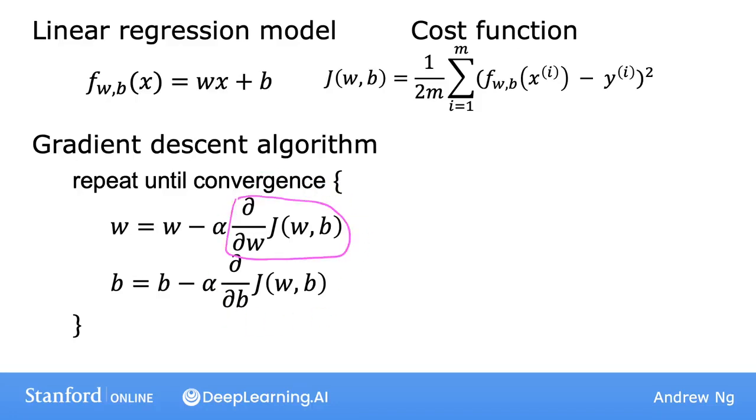The derivative with respect to w is 1 over m, sum from i equals 1 through m, then the error term, that is the difference between the predicted and the actual values, times the input feature xi.